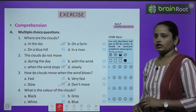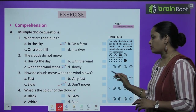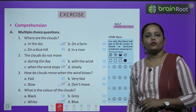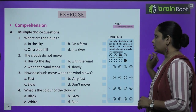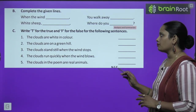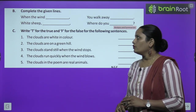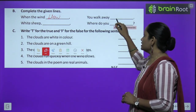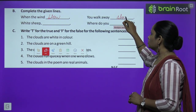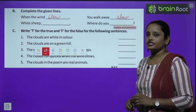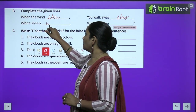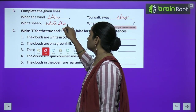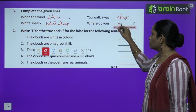What is the color of the cloud? Black, gray, white, or blue? The color is white. Now let's move on to exercise B, which is complete the given lines. When the wind blows, you walk away slow. White sheep, white sheep, where do you go?